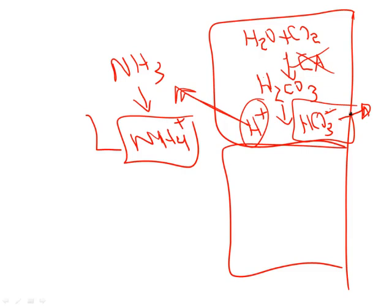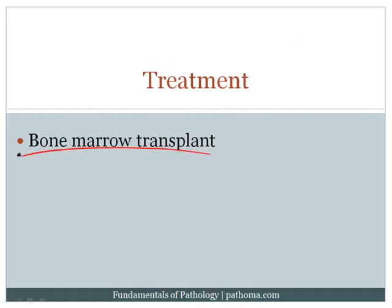The treatment for osteopetrosis is bone marrow transplant, which is also high yield. You might wonder why — the answer is that in osteopetrosis, the osteoclasts are not functioning properly. Osteoclasts are essentially macrophages derived from monocytes, which come from hematopoiesis. A bone marrow transplant restores the ability to make normal monocytes and therefore normal, functional osteoclasts. This is a particularly high-yield association.